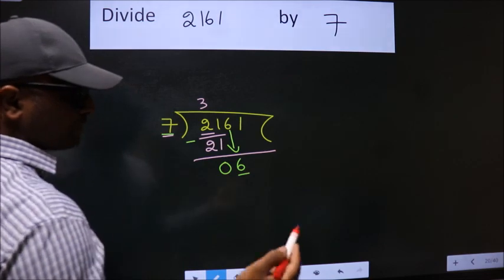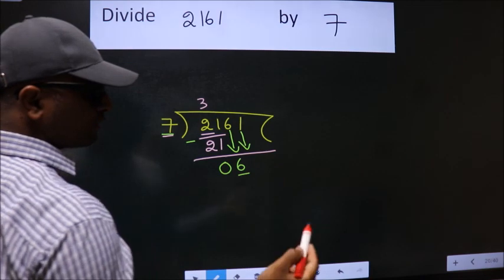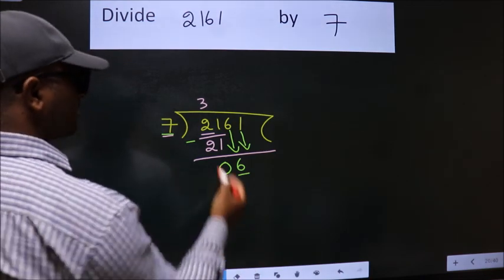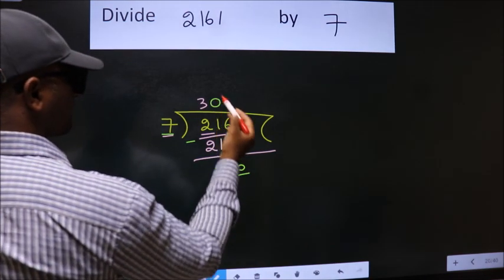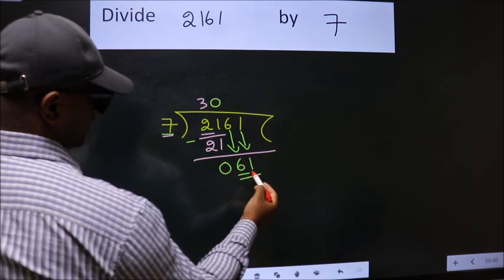So we should bring down the second number. And the rule to bring down the second number is put 0 here. Then only we can bring down this number. So 61.